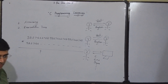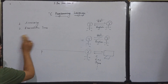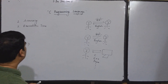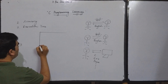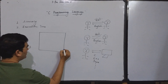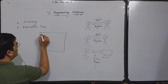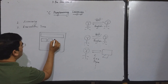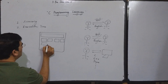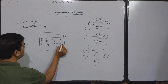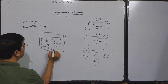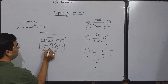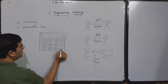Let us take the example of a calculator to understand what programming is. This is a calculator with a display and some buttons to perform operations — digit buttons 1 through 9, and operation buttons plus, minus, and equal to.